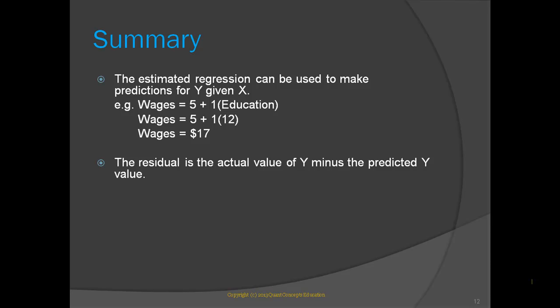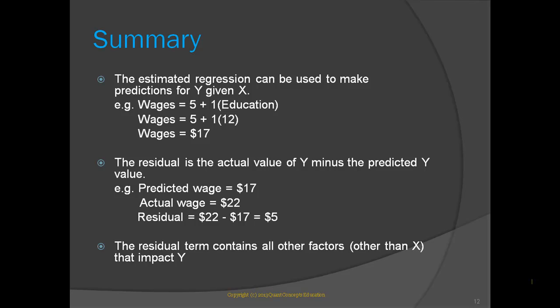The residual is the actual value of y minus the predicted value of y. For example, our predicted wage for someone with 12 years of education is $17. However, the actual wage may in fact be $22 an hour. This means, using this regression, our individual has a residual equal to $5. Why do we have errors in our regression predictions? Because the regression model does not account for all factors that affect the y variable. In reality, there are an infinite number of potential factors that impact a person's wage. The residual term represents all other factors, other than those included in the regression model, that also impact y.